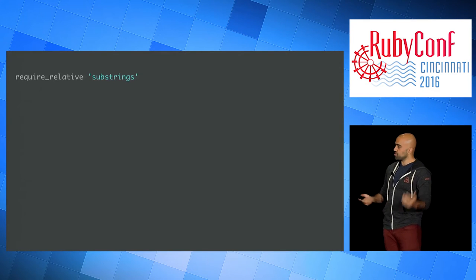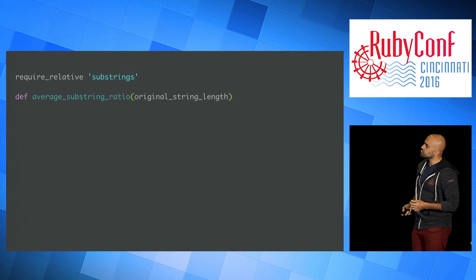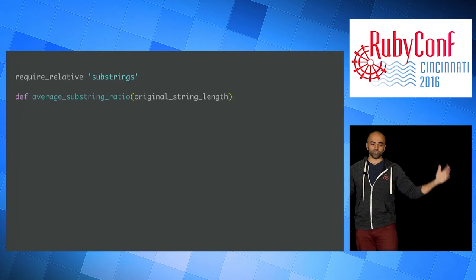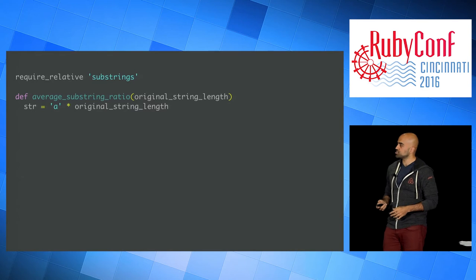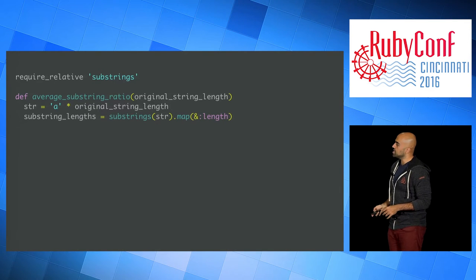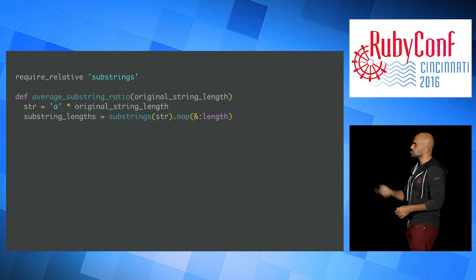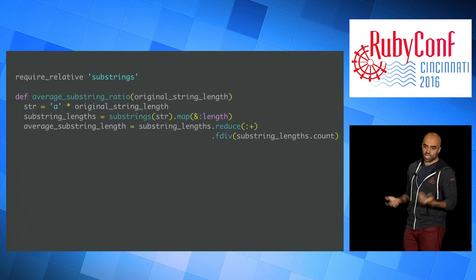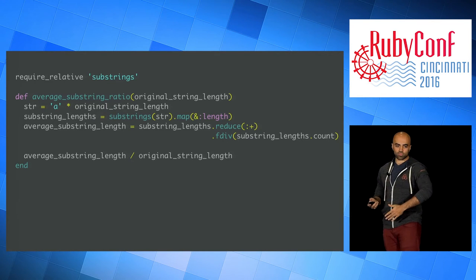Let's use Ruby to actually compute it. I'll write a method called average_substring_ratio. Given an original string length, it computes all the substrings and finds what the average substring length is as a ratio to the original string. The string I'm building is just a series of A's. I call substrings, map them to their lengths, add them all together, divide by count to get the average, and return average_substring_length divided by original_length.